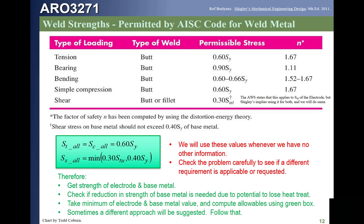Our basic approach: get the strength of both the electrode and the base metal. If the problem statement says there is a loss of base metal strength — say a 15% or 20% knockdown due to heat treat effects — we first take the F sub TU and F sub TY of the material, apply the knockdown, and then apply the formula: 60% of yield for tension allowable, minimum of 30% of tensile ultimate and 40% of yield for shear. Whichever governs, we write our margins of safety against that.